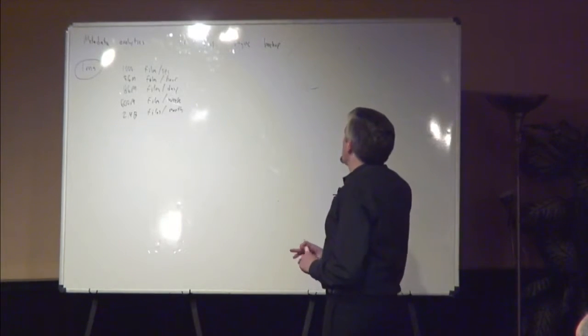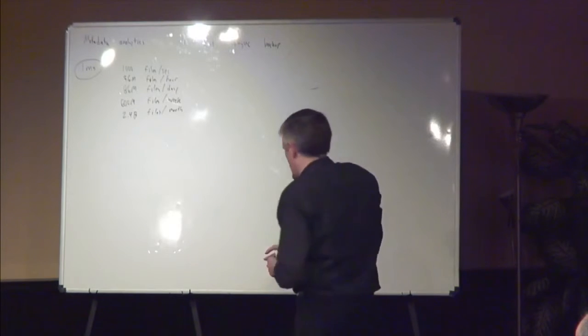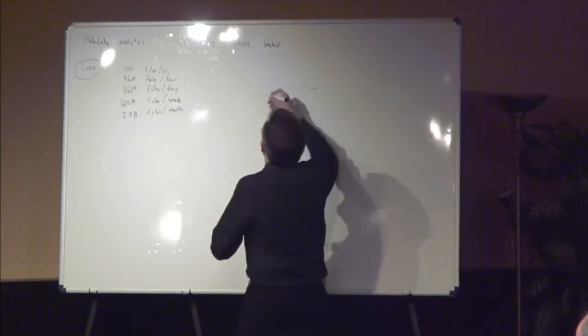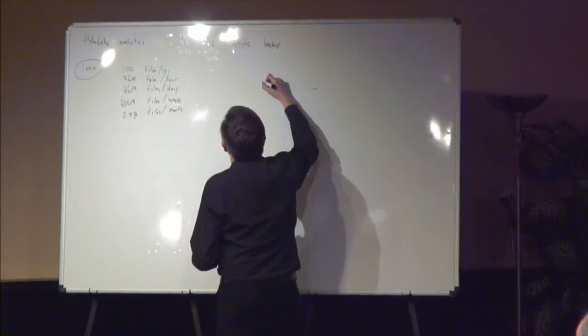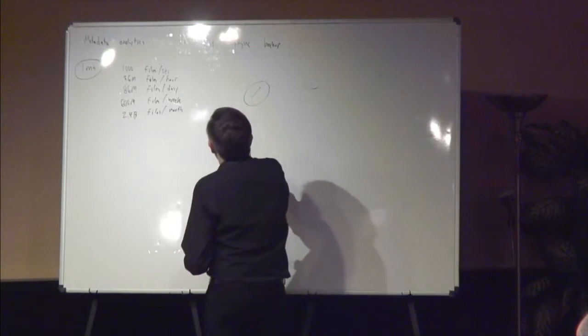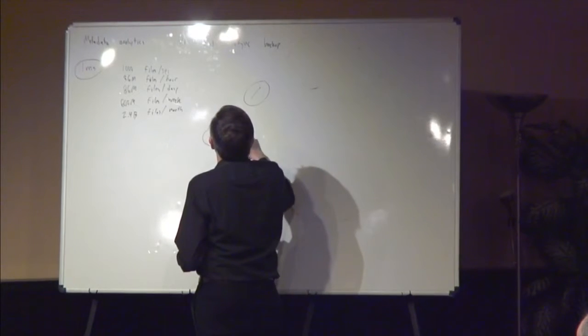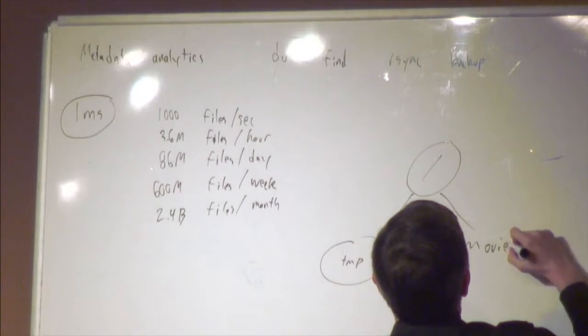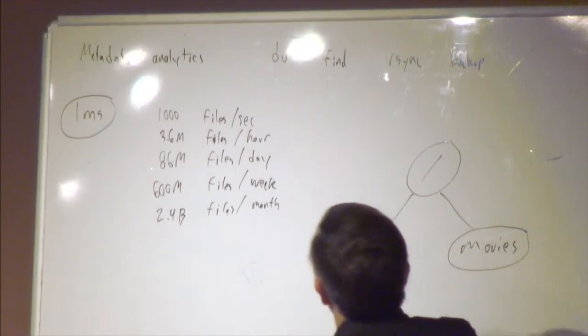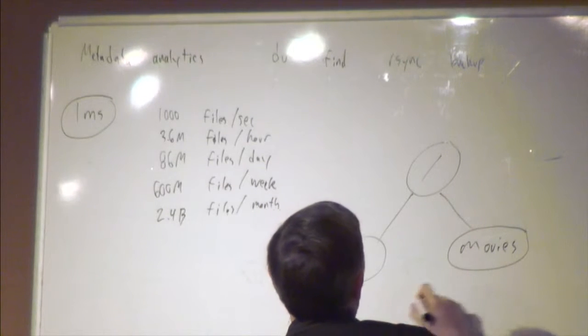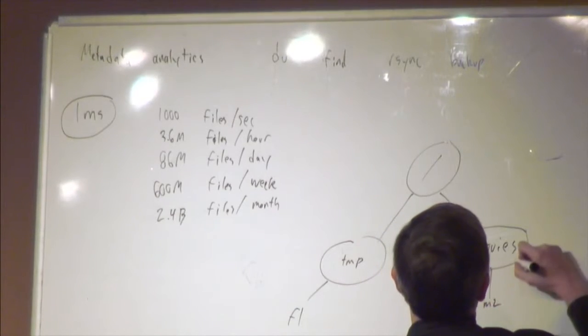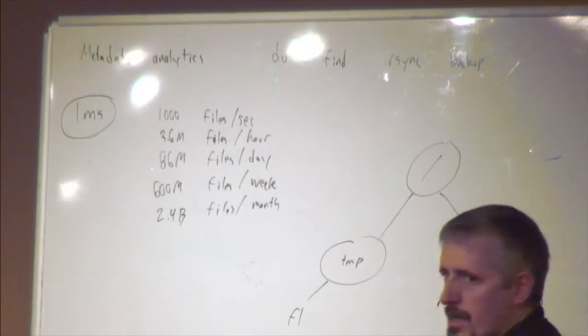Let's talk about what people do today to get around this problem. Let's put up an example file system. We have slash temp, with a file F1, and a movies directory. Movies will have three files: M1, M2, and M3. Not the Mission Impossible movies.